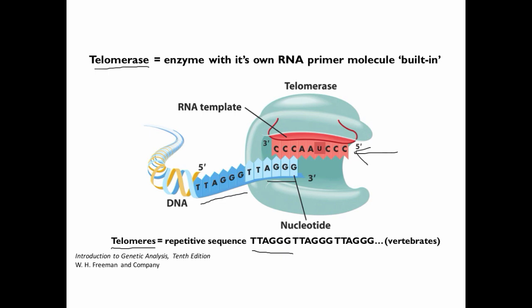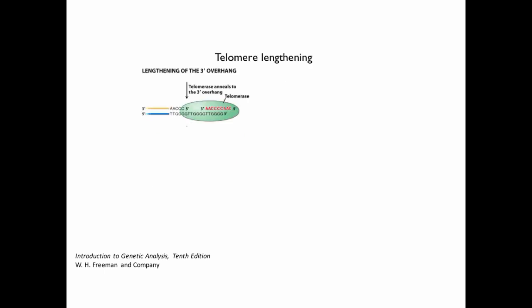So telomerase, with its RNA template or RNA primer, will bind in a staggered manner to the 3' overhang, and through a reverse transcriptase mechanism, use that RNA primer as a template to add new nucleotides and extend that 3' overhang.